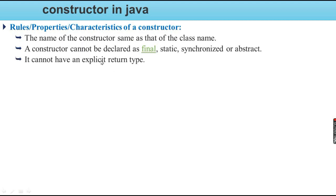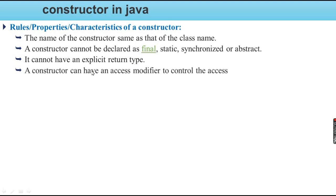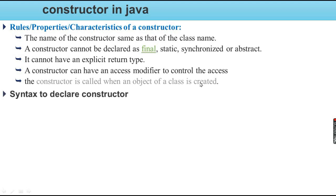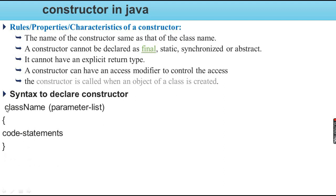A constructor cannot have an explicit return type. However, it can have an access modifier in order to control access. The constructor is called when an object of the class is created — it is invoked automatically at object creation time. The syntax to declare a constructor uses the class name followed by parentheses and a parameter list.